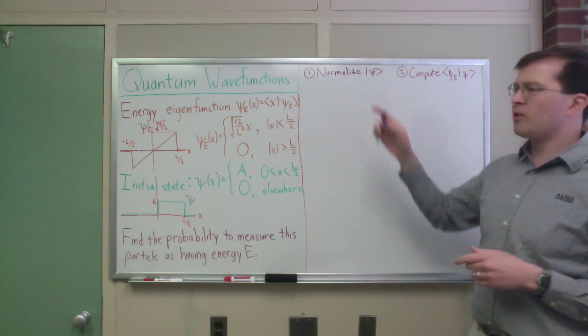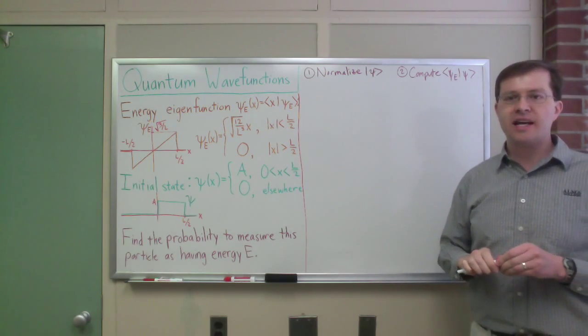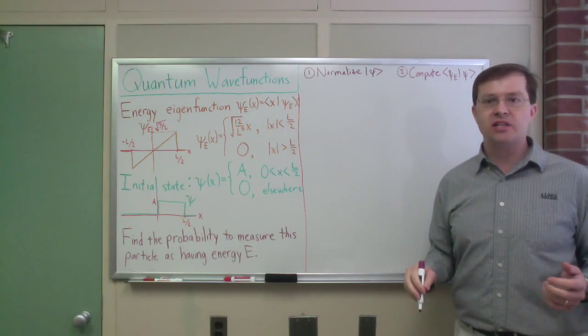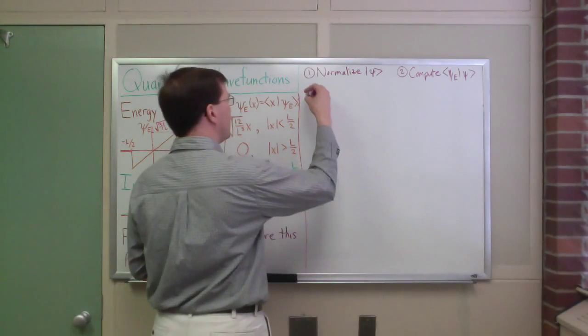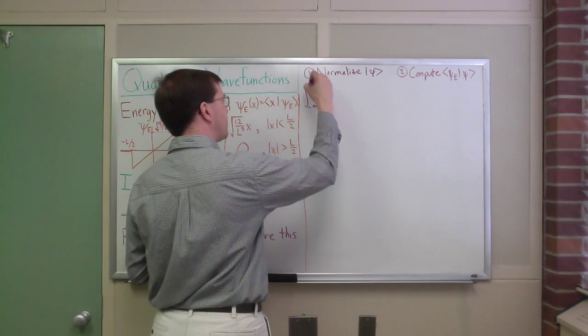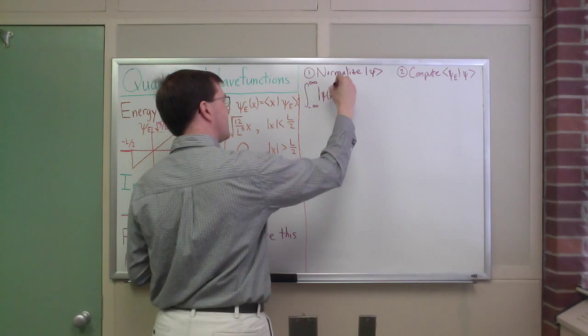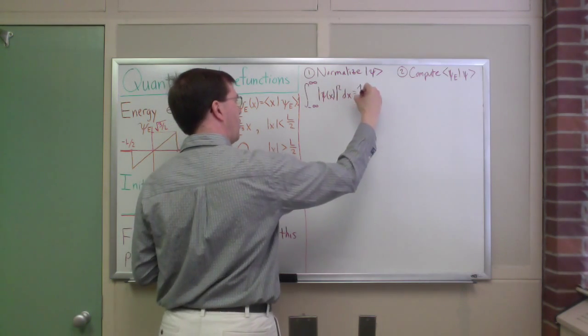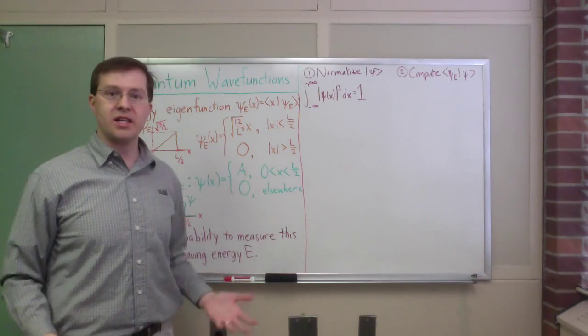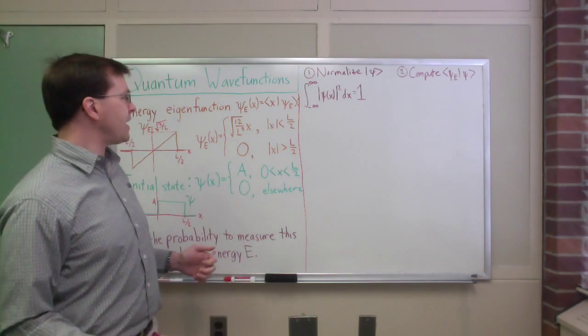So first, to normalize psi, I need to figure out what value of A, my constant A, will make this a normalized state. Let's do that. The normalization condition for psi is pretty simple. It is that the integral from minus infinity to infinity of psi of x squared dx has to equal 1. That's normalization for any quantum wave function. That's the normalization condition. And I can do that.